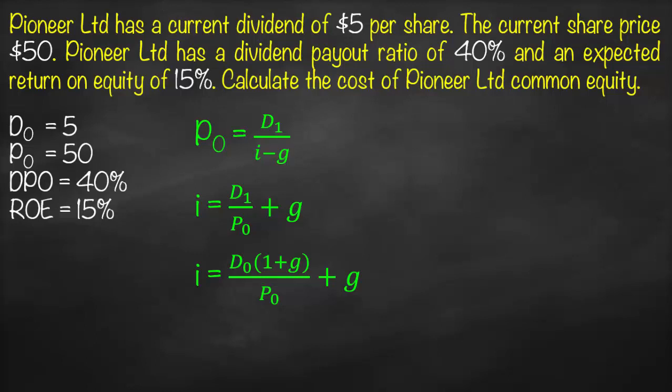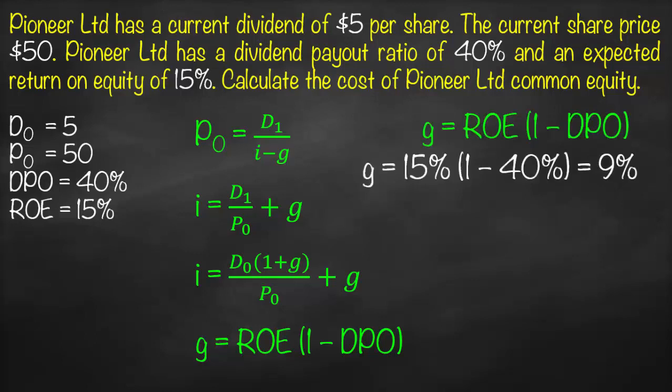We also don't have the growth rate directly, but we can calculate it from our financial ratio formulas. The sustainable growth rate formula is: g equals return on equity multiplied by (1 minus dividend payout ratio). Substituting our variables: g = 15% × (1 − 40%), which gives us a growth rate of 9%.